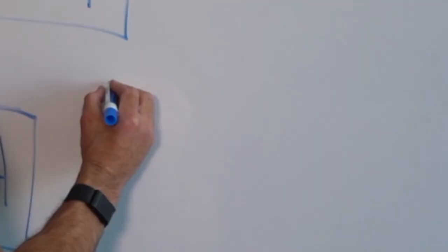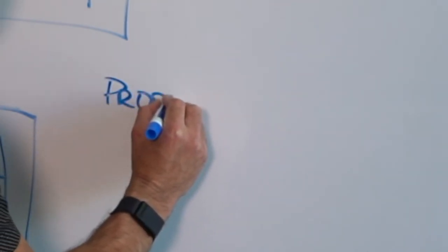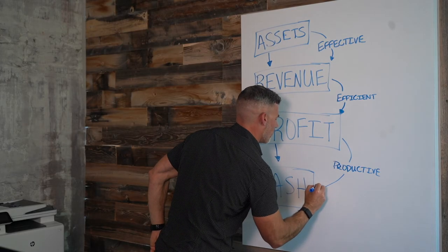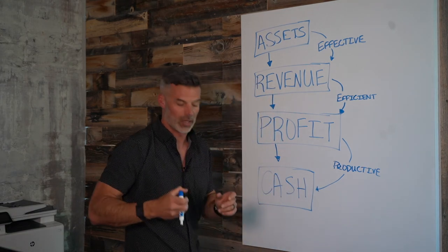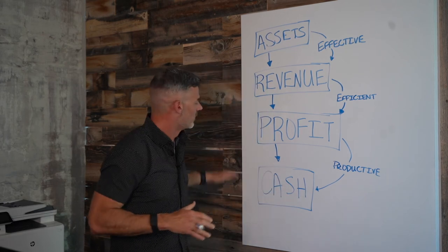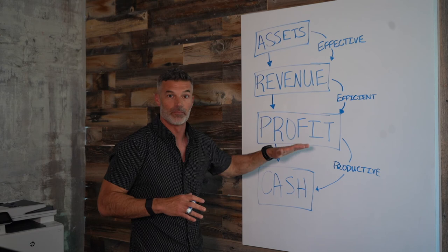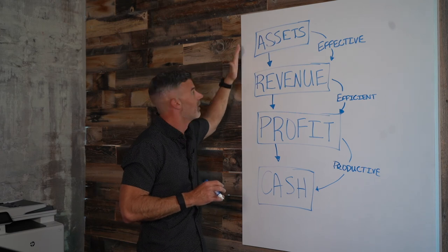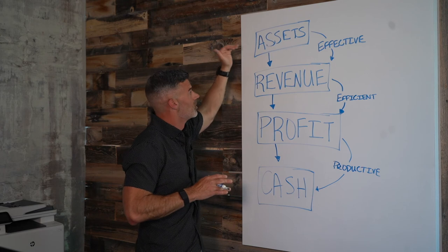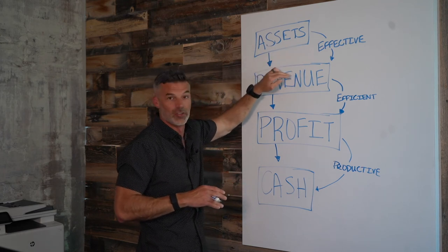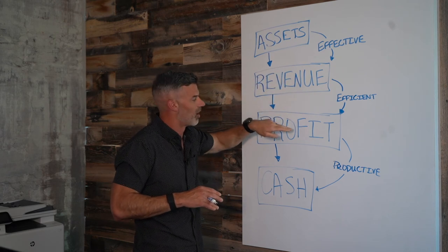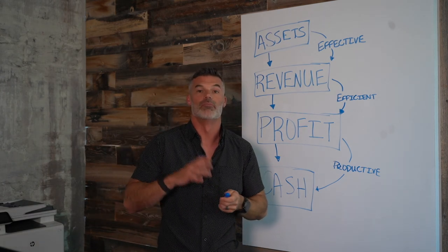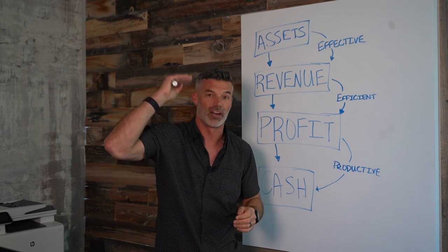The final piece is how productive you are at turning profit into cash — meaning how quickly does it go from just being on your books as profit into actual cash in your bank account that you can spend? If you are effective at converting assets to revenue, efficient at converting revenue to profit, and productive at converting profit to cash, you can have a smaller business but still make more and take home more than people with the very biggest businesses.